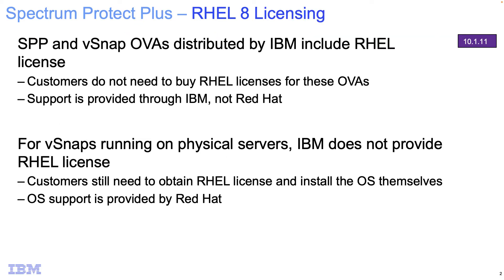From an upgrade or migration perspective, there are some consequences of this for our users. The first is licensing of RHEL 8. Beginning with 10.1.11, the OVAs or the virtual appliances distributed by IBM with Spectrum Protect Plus will include a license for Red Hat version 8, and support for that operating system and upgrades for it will be provided by IBM.